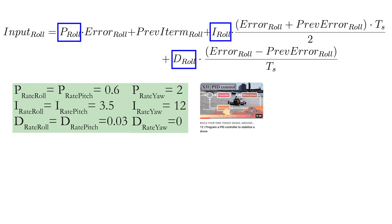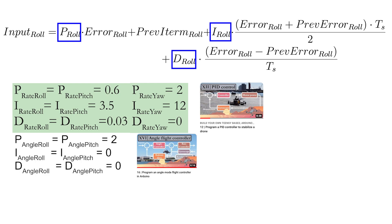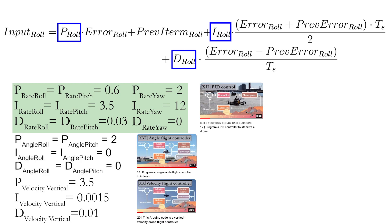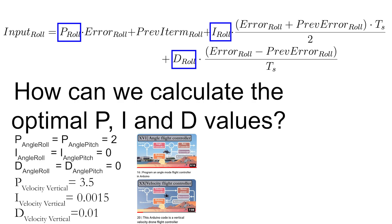These were different for the three flight controllers that we developed together: rate mode, angle mode and vertical velocity mode. At the time, I did not explain how you can obtain these optimal PI and D values because it requires non-trivial mathematical operations. Calculating the optimal PI and D values will be the goal of this video series.